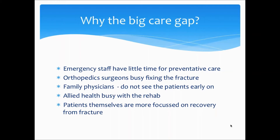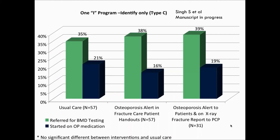With family physicians, they would be the best people to deal with the osteoporosis care gap, but they told us that often they don't see patients early on in their fracture history. They might not see them until after everything has settled down, and by that time they've got other more pressing health care issues to deal with. Allied Health are busy with rehabilitation, and patients themselves are more focused on the recovery from the fracture — after all, this was just an accident, and as long as they are careful next time, they won't have another fracture.